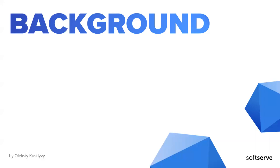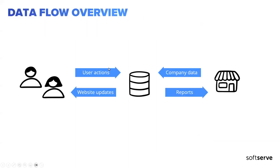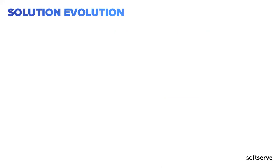Let's first chat about the background. We have a classic data flow model. Our users take action on the website and receive updates or responses while using the site. The company, in turn, provides users with content and receives reports on user actions.